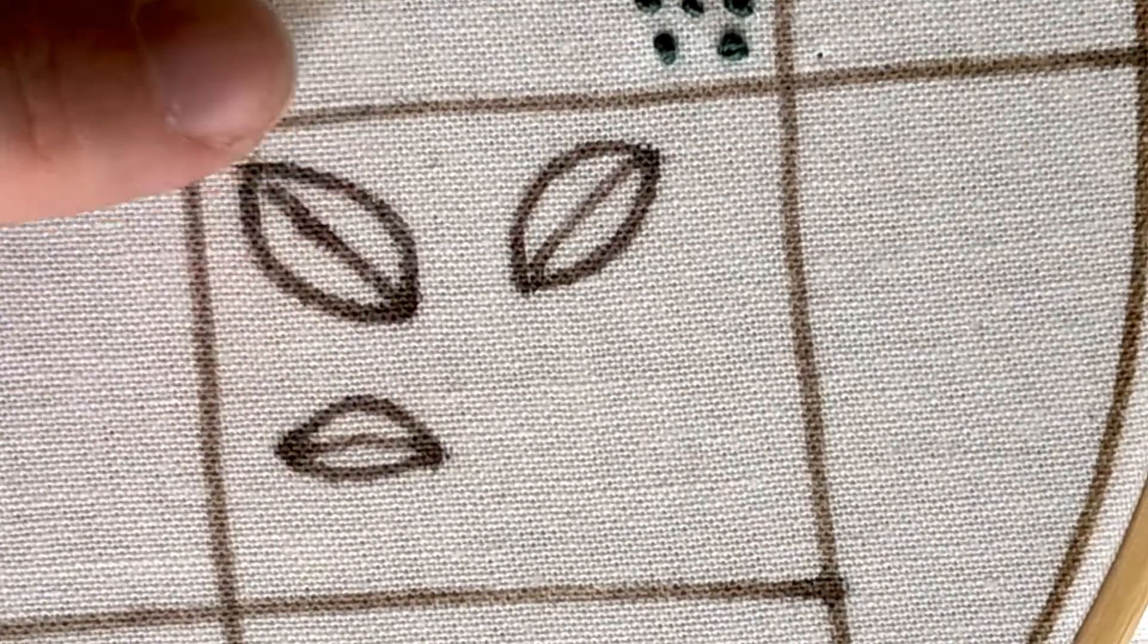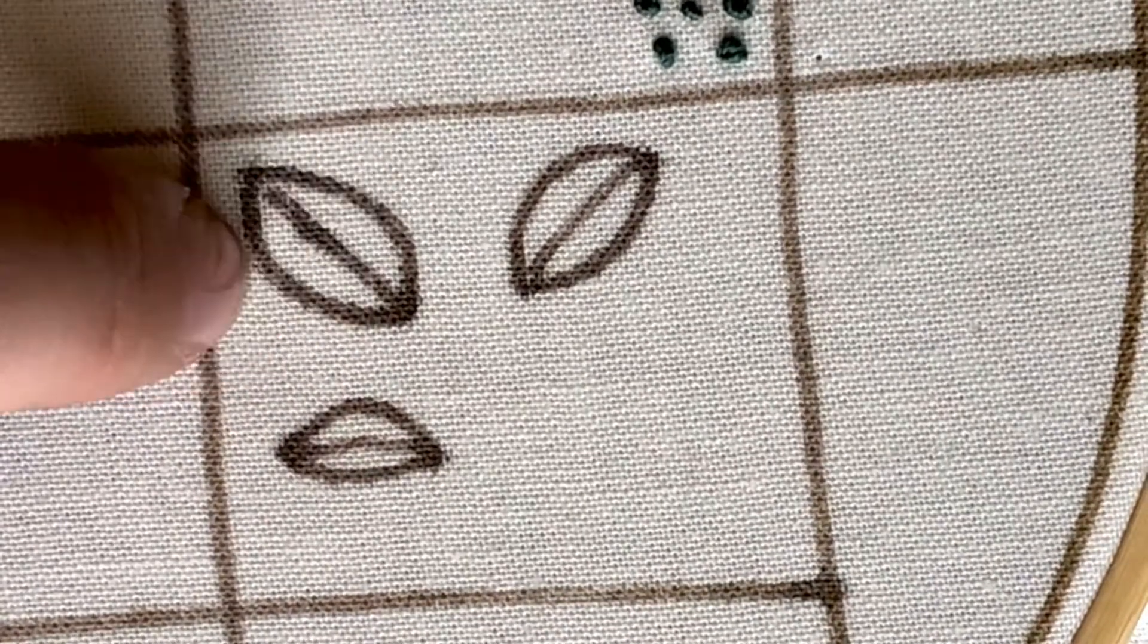This is the stitch that I use commonly to make my leaves and it's a method of going back and forth overlapping stitches.